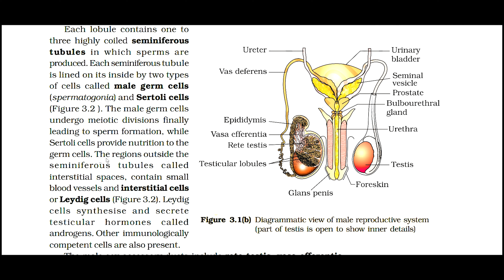The regions outside the seminiferous tubules called interstitial spaces contain small blood vessels and interstitial cells, or Leydig cells, as given in figure 3.2. Leydig cells synthesize and secrete testicular hormones called androgens. Other immunologically competent cells are also present.